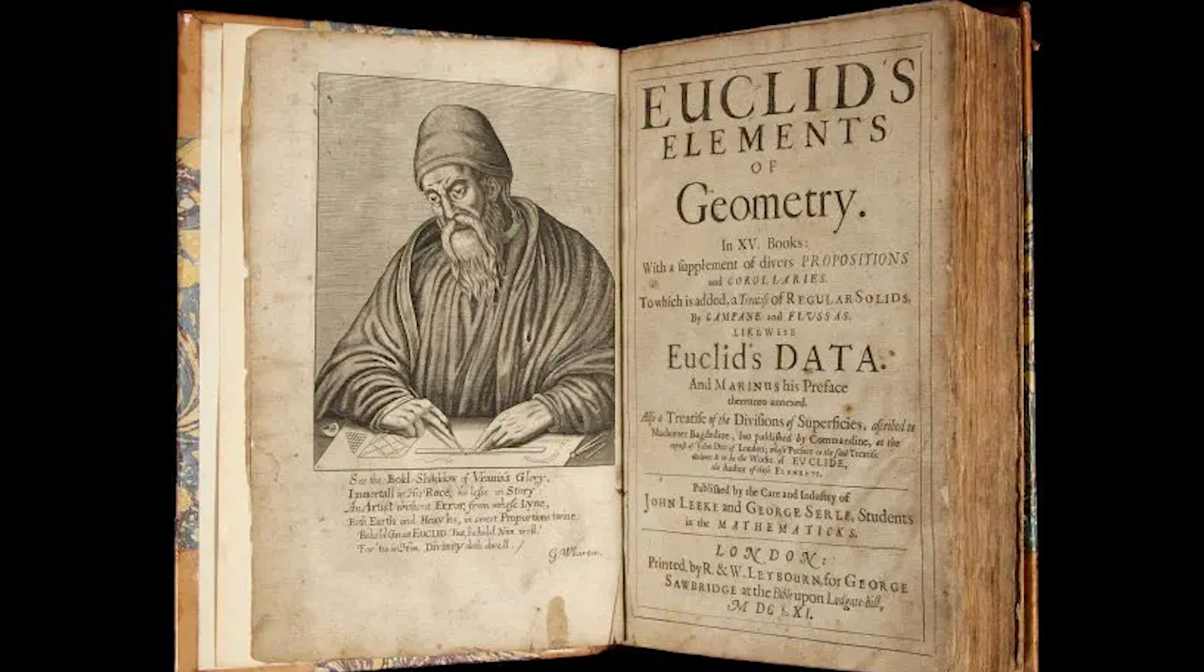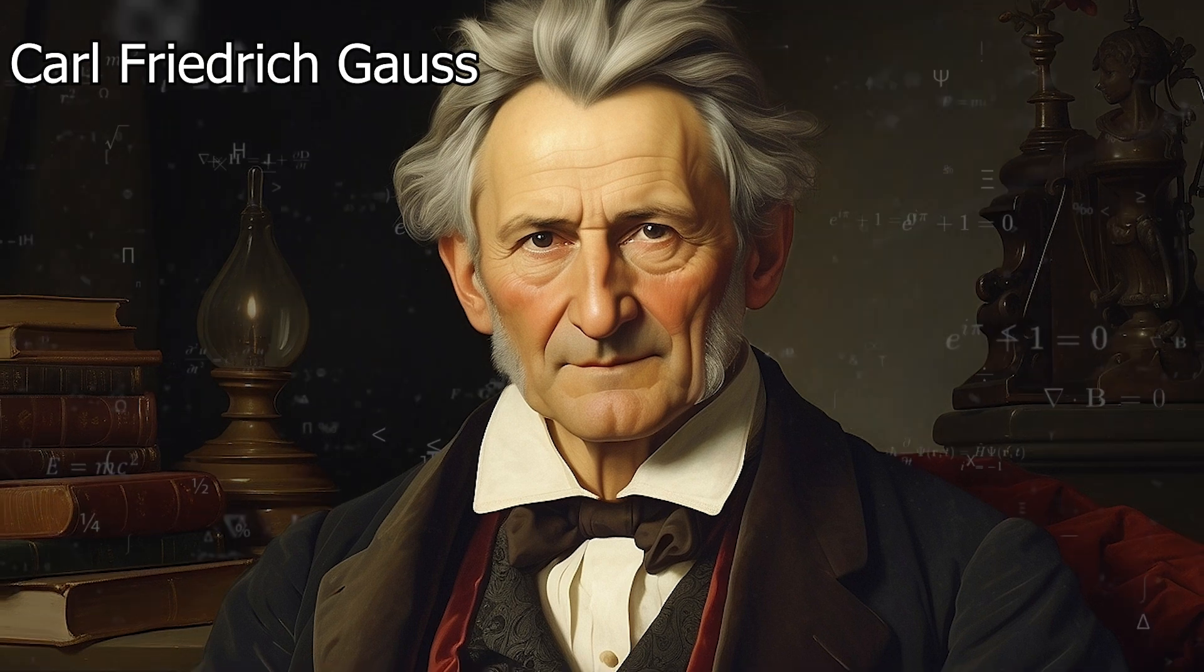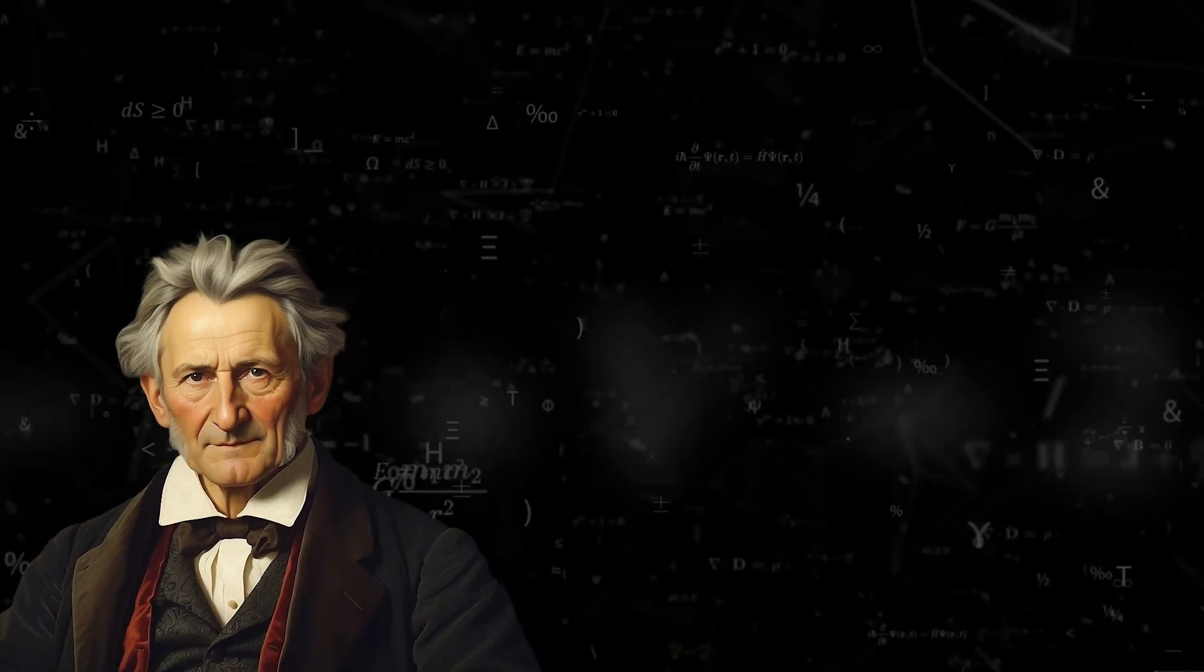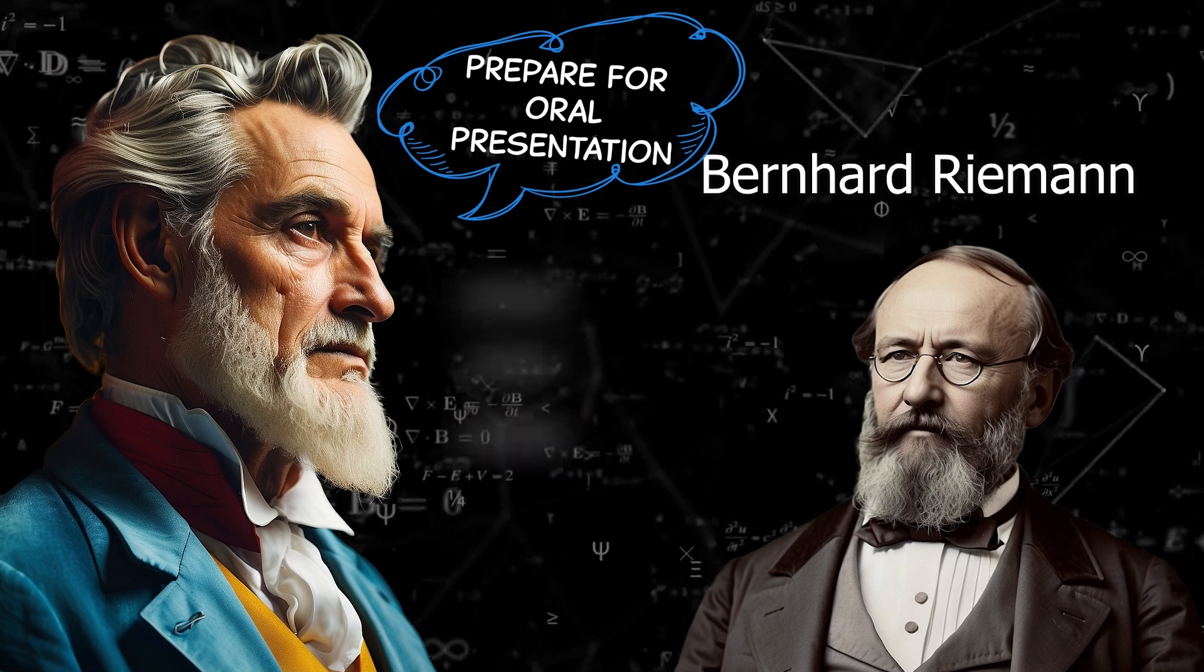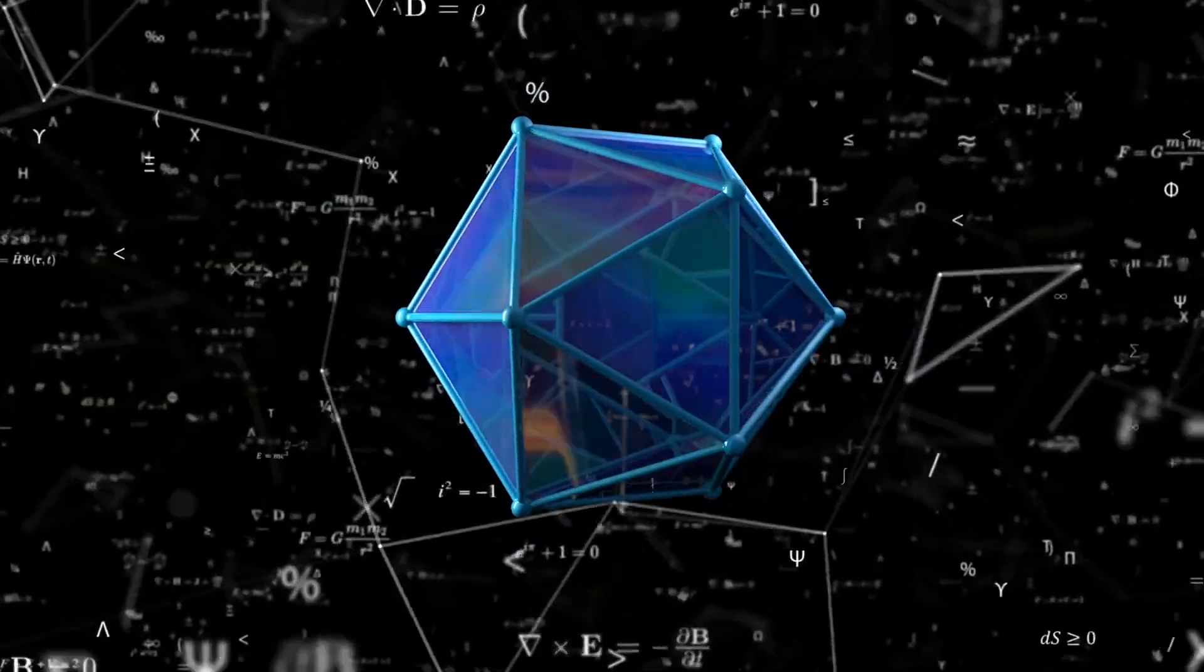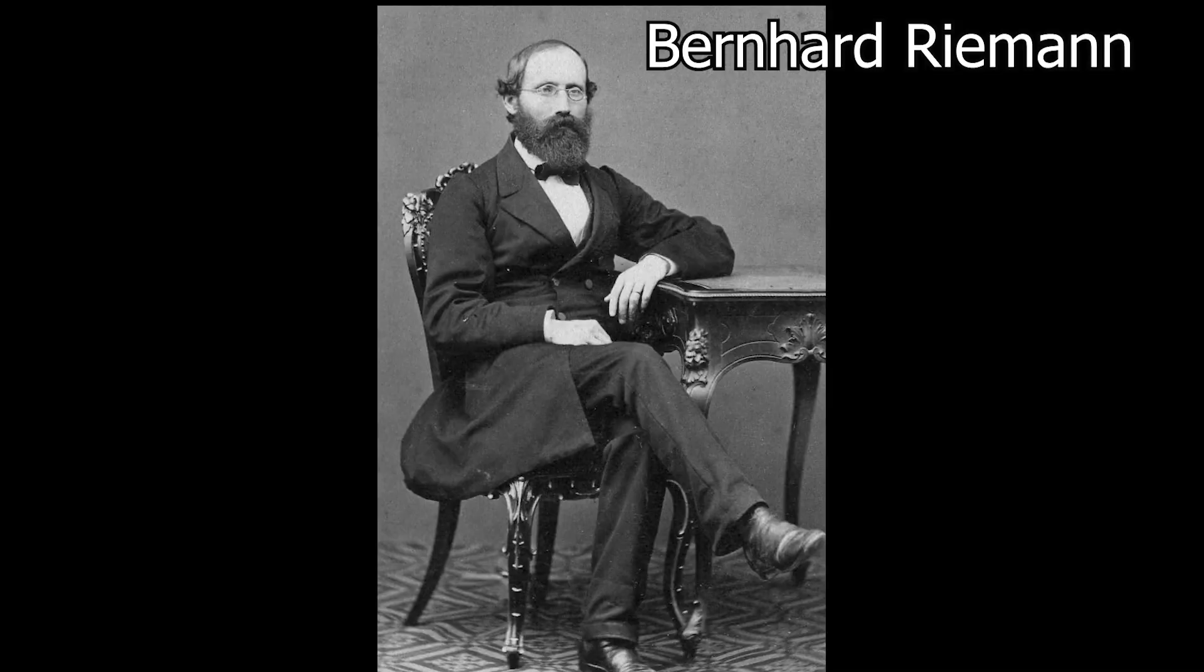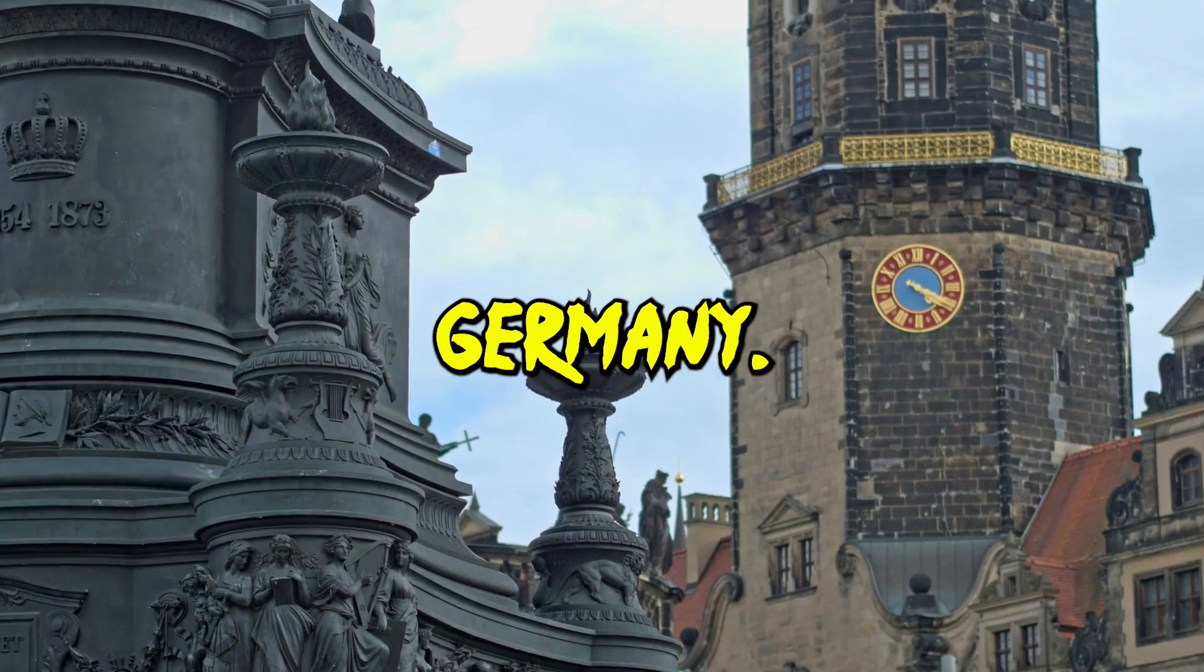Finally, the decisive break with Euclidean geometry came when Karl Friedrich Gauss, one of the greatest mathematicians ever lived, asked his student Bernhard Riemann to prepare an oral presentation on the foundation of geometry. Bernhard Riemann was born in 1826 in Hanover, Germany.